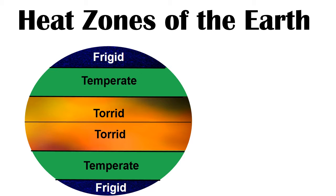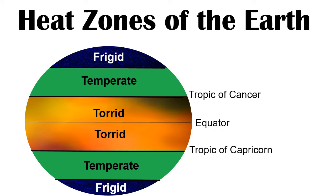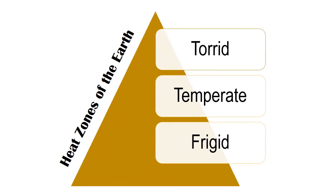Different regions — parallels such as the equator, the Tropic of Cancer, the Tropic of Capricorn, the Arctic Circle and the Antarctic Circle — receive sun rays at various angles. On the basis of the distribution of temperature, the Earth is divided into three heat zones.